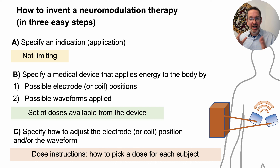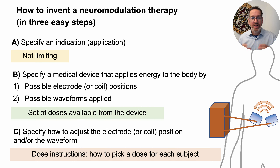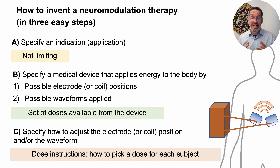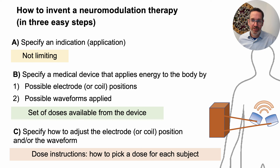So again, how do you invent a neuromodulation device? First, think of what you want to use it for — but think broadly. Second, focus on dose and think not about one dose but the dose set your device can deliver — all the possible combinations. Third, provide instructions for how to pick from that dose set in order to produce the desired outcome.